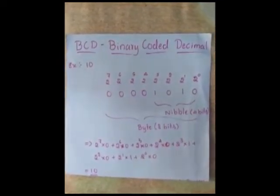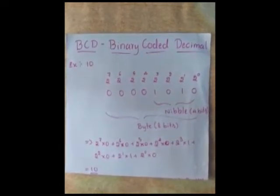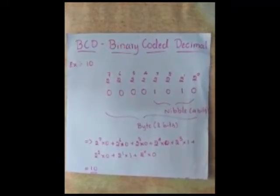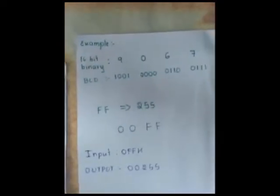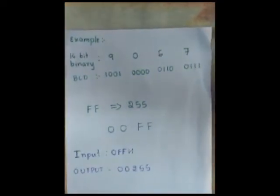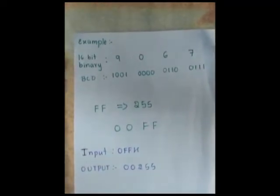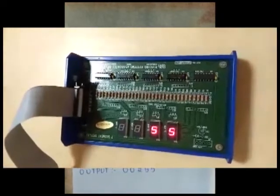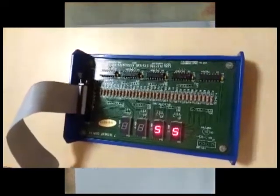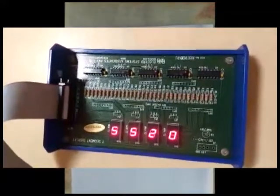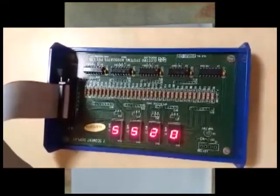To find the BCD we just have to multiply the bits with their corresponding power of 2. For the 16-bit value we need 4 decimal numbers as each number takes 4 bits. In our example we took the binary as FF, which gives the corresponding BCD as 255. So our task is to take the binary value and display its corresponding BCD in the seven segment display.